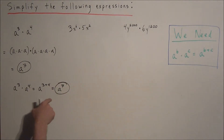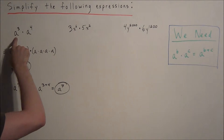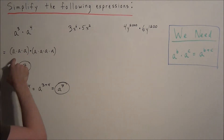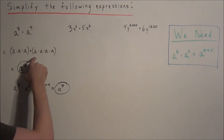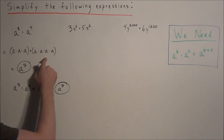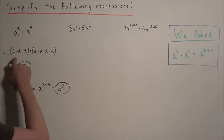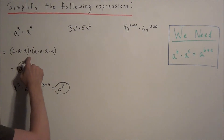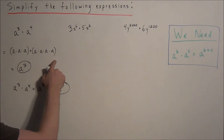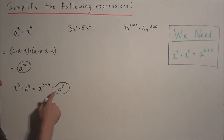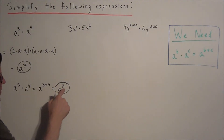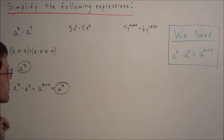The reason this property works is because when we expand a to the third as a times a times a, and expand a to the fourth as a times a times a times a, we have a string of three a's and a string of four a's. Altogether we have a string of three plus four a's all attached by multiplication, therefore a to the seventh power.